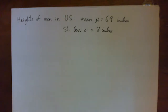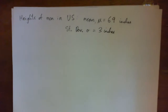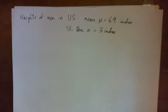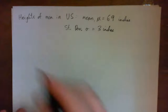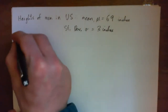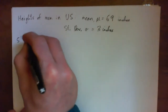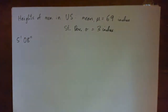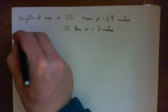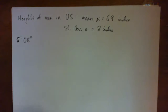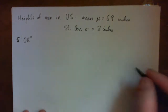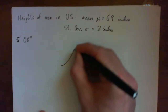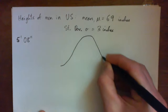We're looking at heights of men in the US. The mean is 69 inches, standard deviation is 3. The question asks about someone who's 5 foot 8: what percent of the population is he taller than, and what percent is he shorter than? I'm going to take a few minutes and really work through this so we all understand.